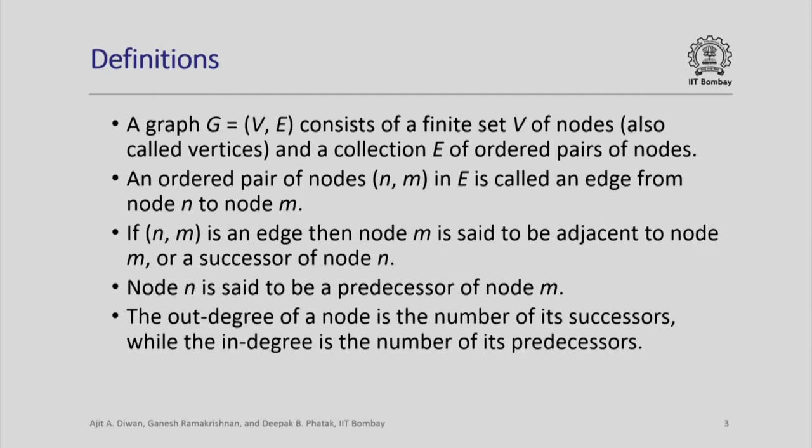What is a graph? It consists of a finite set V of nodes, also called vertices, and a collection E of ordered pairs of nodes. If an ordered pair (n, m) is in the set E, then it is said to be an edge from node n to node m. E is a collection of edges which are essentially ordered pairs of nodes. If (n, m) is an edge, then we say node m is adjacent to node n, or a successor of node n.